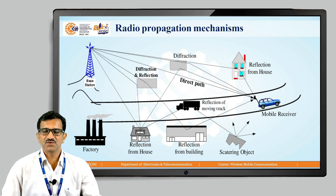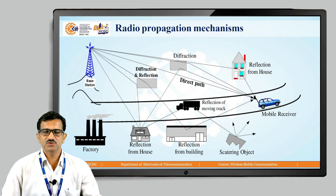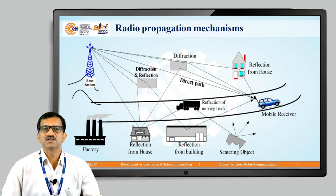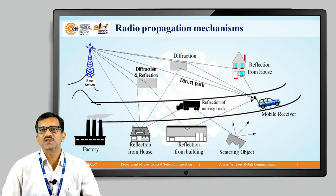This covers free space loss, which is completely dependent on the Friis formula and its different parameters. Now we will see the radio propagation mechanisms. In urban areas — homes, buildings, factories, and traveling vehicles — the signal propagates from the transmitting antenna to the receiving antenna through reflection, diffraction, and refraction. These are the different paths through which the signal travels.